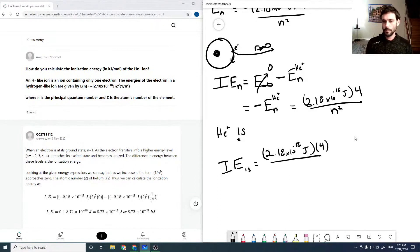all over 1 squared, which comes out to be 8.72 times 10 to the minus 18 joules. And that's it.